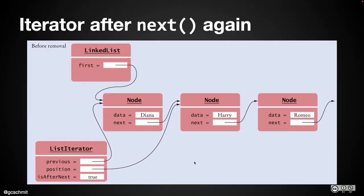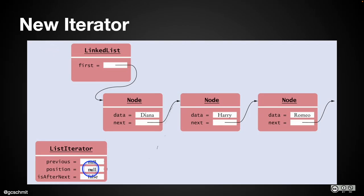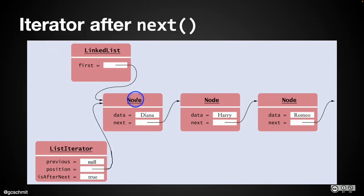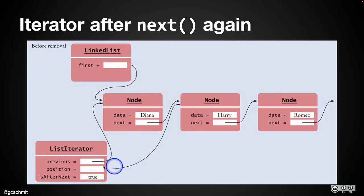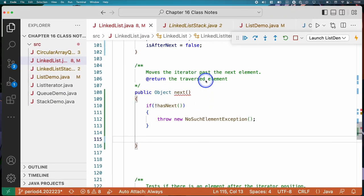Let's look at the picture again. There are a couple of different cases to handle. When we call next, if position is null that means we're at the beginning of the list and we need to set position to the first node. If position is not null, we need to set previous to what position was and set position to the next node.